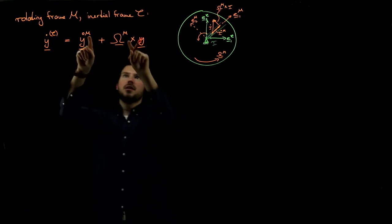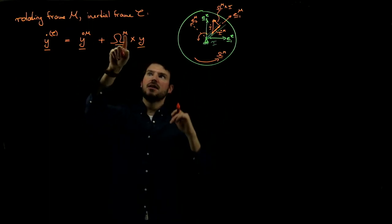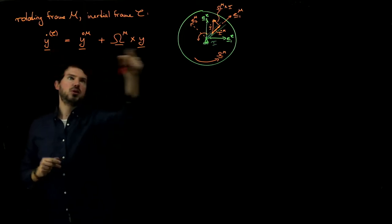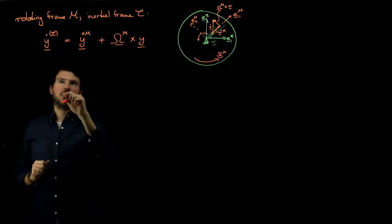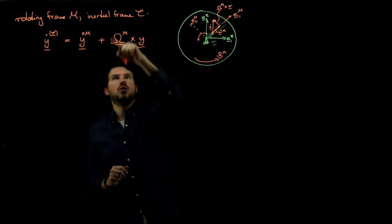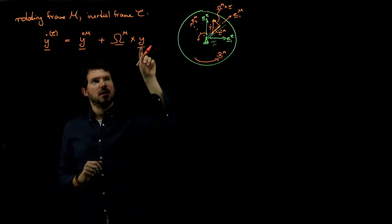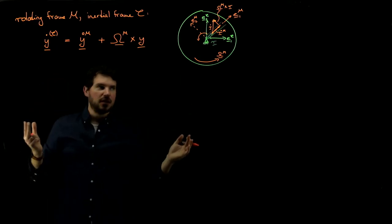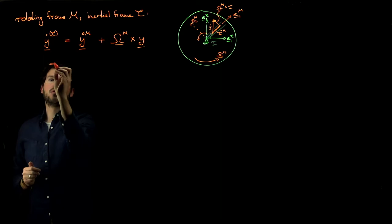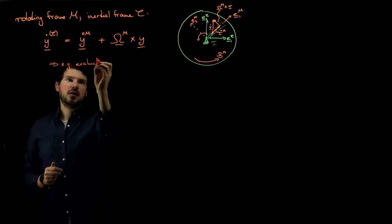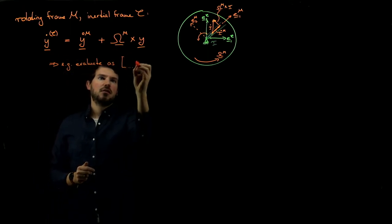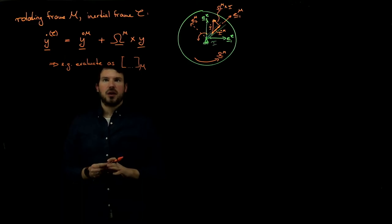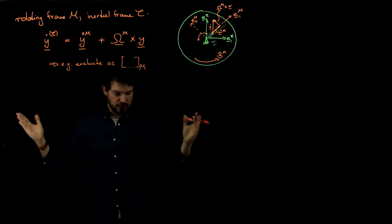The superscript m indicates 'as seen in the moving frame' for the derivative, and omega is simply the angular velocity of the moving frame. This is a vector equation which can be evaluated in any frame, because it's just vectors — it doesn't specify what components we're talking about. We can evaluate it in the m-frame, for example expressing all vector components in m and then carrying out the cross product. But by itself it's a vector equation, not particular to any frame.